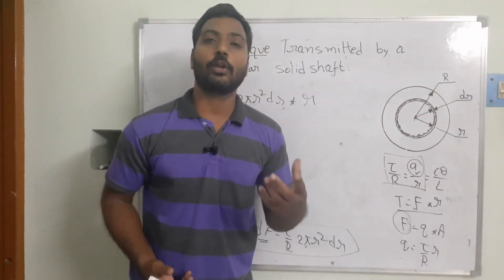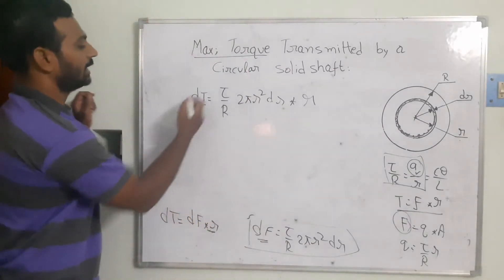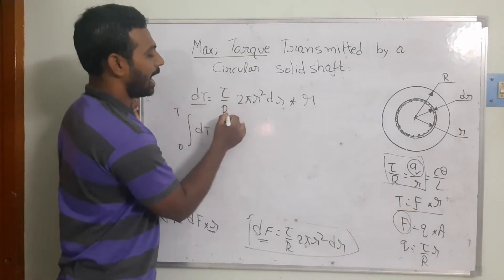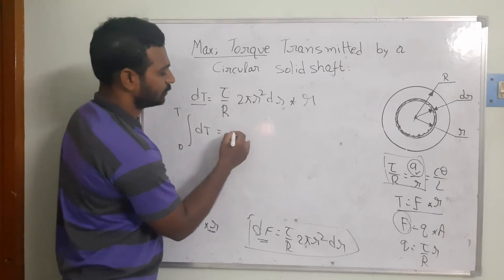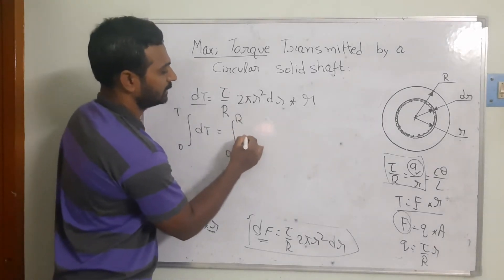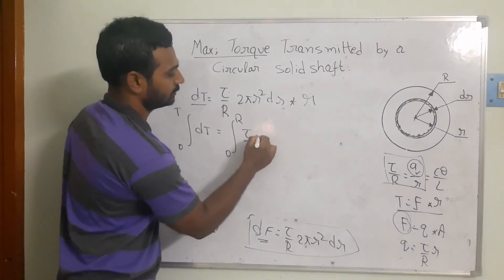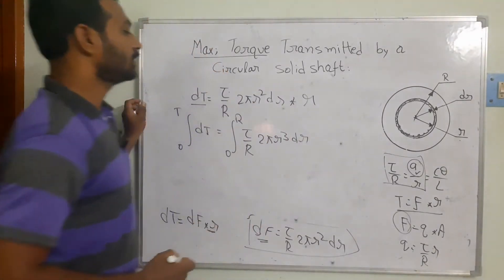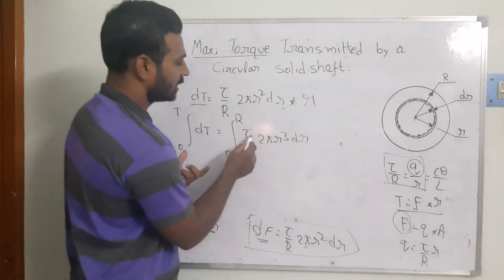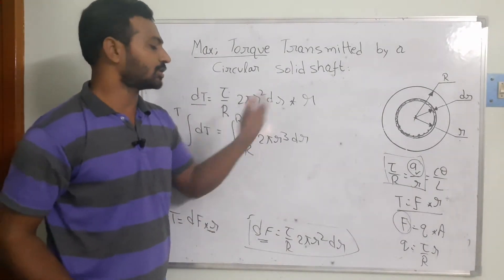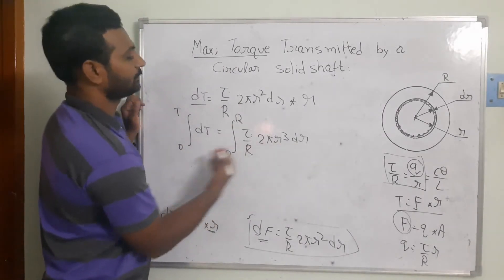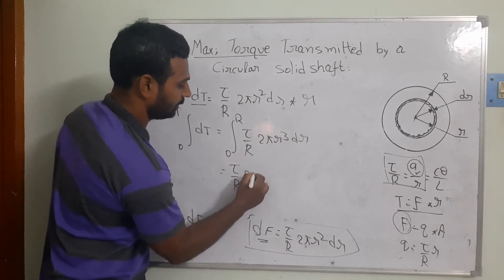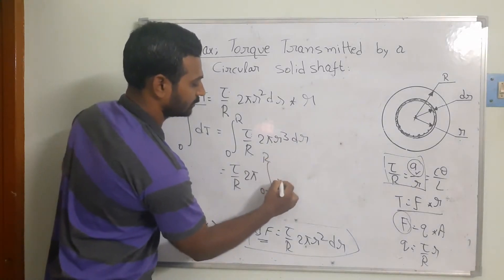I want to find how much torque the total circular shaft transmits. Taking the integral, T equals the integral from 0 to R of dT, which equals the integral from 0 to R of (τ/R)·2πr³·dr. Since τ, R, and 2π are constants, we take them outside the integration: T equals (2π·τ/R) times the integral from 0 to R of r³·dr.